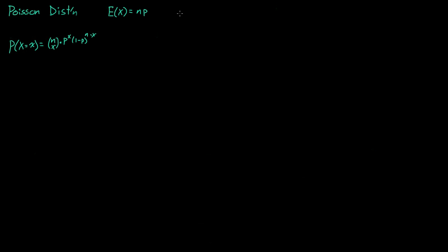Now for a Poisson distribution we actually know the expected value, and we call this lambda. So let's say you've been working at a factory for three years and you notice that for every meter of wire there are three flaws. So three flaws for every meter of wire means lambda is three — on average there are three flaws per meter.